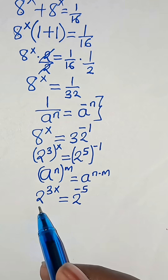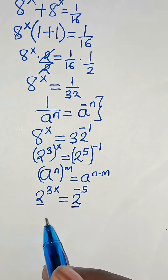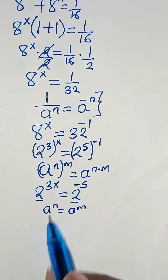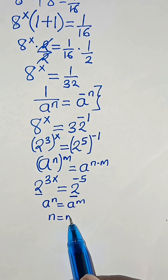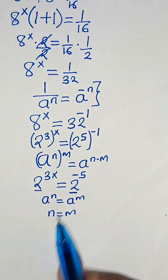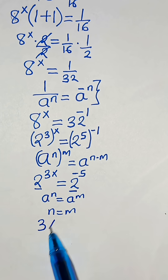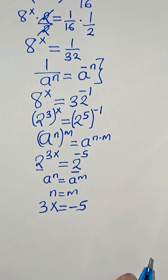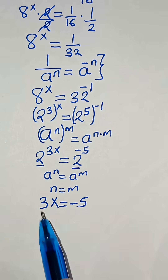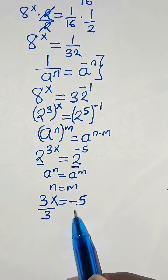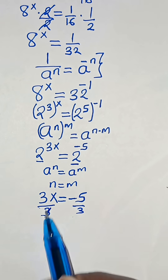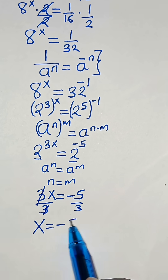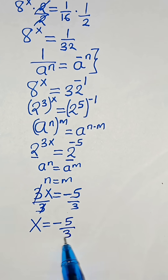And since the bases are common — that is, a to the power of n equals a to the power of m implies exponent n equals m — applying this property we have 3x equals minus 5. Dividing both sides by 3, the value of x is minus 5 over 3.